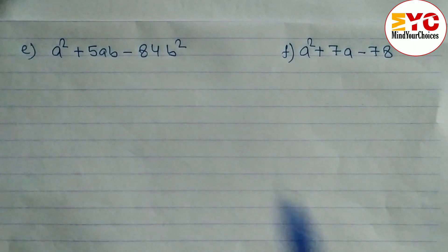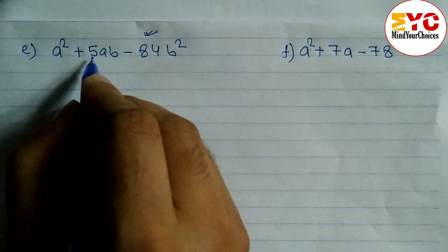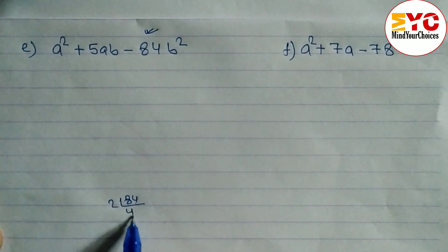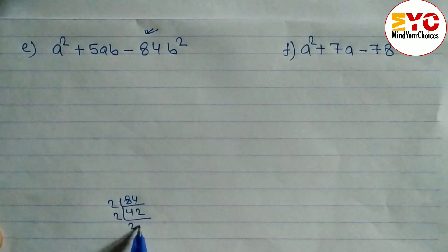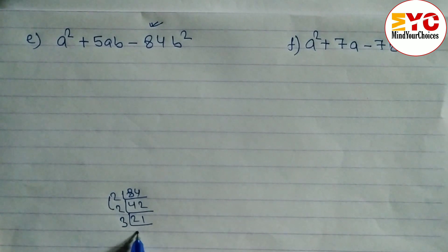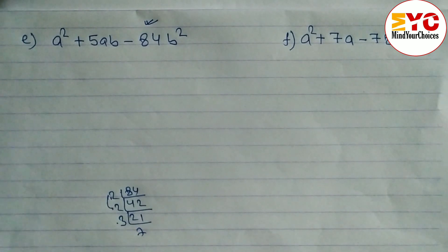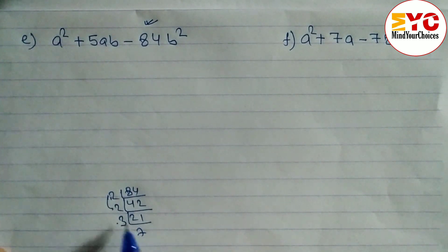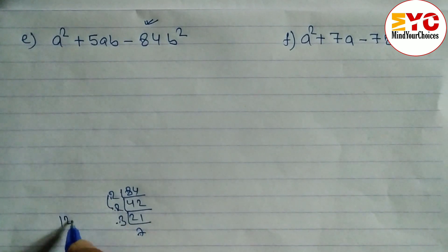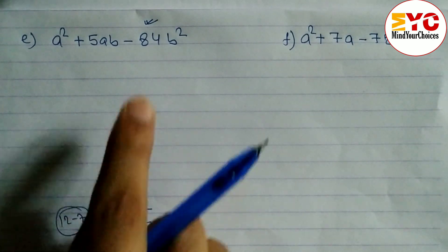Problem E: a² + 5ab - 84b². We need factors of 84 with subtraction 5. Trying: 2 × 42, 3 × 7 = 21. From these, try 14 and 6: 14 - 6 = 8, not 5. Try 12 and 7: 12 - 7 = 5 and 12 × 7 = 84. So the factors are 12 and 7.